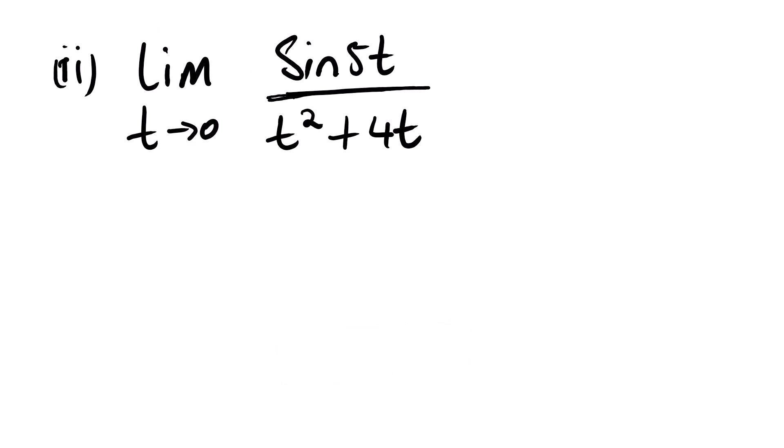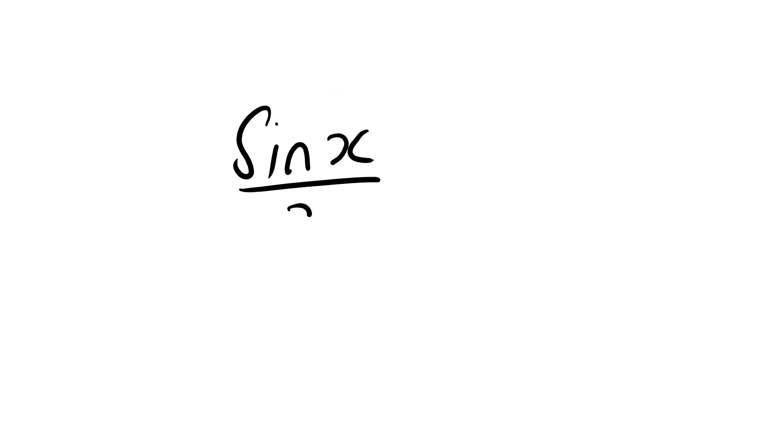Our second question: limit as t approaches 0. You can see that we have a trig function. Now in this case, you should be familiar with the trigonometric identity for sine — specifically sin x over x. When we are looking at the limit as x approaches 0, you must know that this is equal to 1.